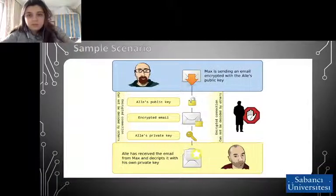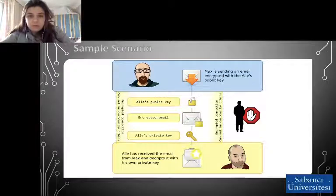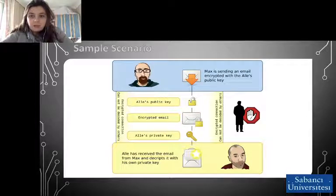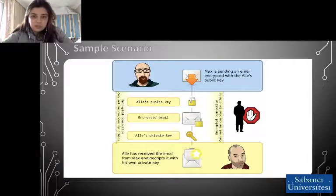Here is a sample scenario of how we use cryptography. Assume there are two friends, Max and L, who would like to communicate through a network and they don't want a third person to read their messages. To ensure secrecy, Max uses L's public key to encrypt the message and sends the ciphertext to L. L has a private key that no one knows, and he decrypts Max's ciphertext using his private key. In this way, no one besides Max and L can decode the encrypted message and the two friends can communicate safely.